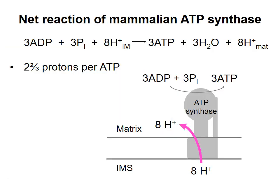The net reaction of ATP synthase is shown here. One complete rotation of the C subunit ring allows eight protons to move from the intermembrane space into the mitochondrial matrix. As this happens, the three beta subunits are contacted in turn by gamma to cause synthesis of ATP at each beta. So for every eight protons that move down the electrochemical gradient, three ATP are synthesized, or one ATP for every two and two-thirds protons. There's no need for this number to be an integer because proton movement and ATP synthesis are not directly connected — they are coupled through rotation of the central gamma subunit.